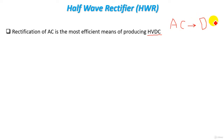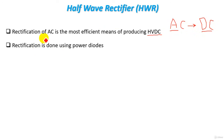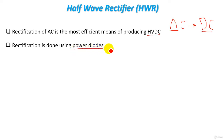Rectification, or the rectifier circuit, converts AC voltage into DC voltage. Rectification is done using power diodes. Power diodes are power electronic devices used in the rectification circuit to withstand high voltage and high current.